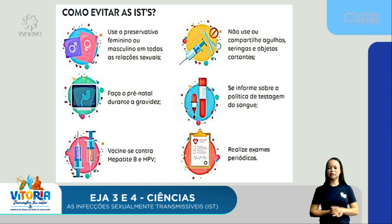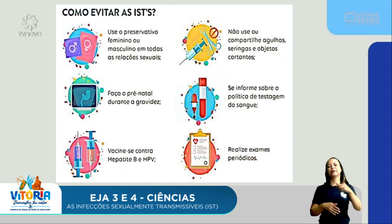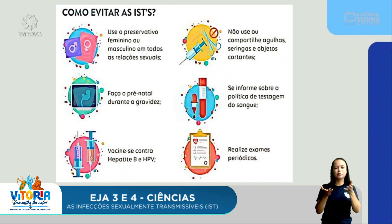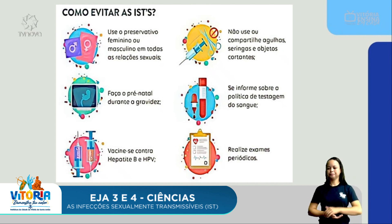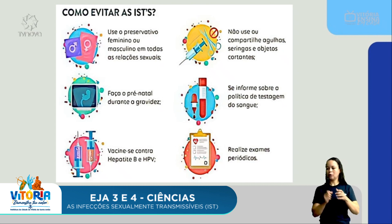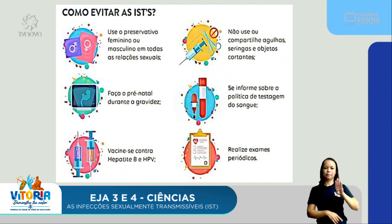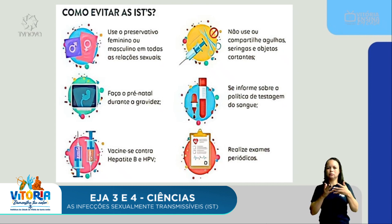Como evitar as ISTs? Use preservativo feminino ou masculino em todas as relações sexuais. Faça pré-natal durante a gravidez — é importantíssimo, pois vai evidenciar se você teve ou não contato com algumas dessas doenças, sendo fundamental para você e para o seu futuro bebê. Vacine-se contra a hepatite B e o HPV. O Plano Nacional de Imunização, criado em 1973, garante para todos a vacina contra o HPV e a hepatite B. Não use nem compartilhe agulhas, seringas e objetos cortantes — principalmente quando se pensa em hepatite e AIDS.